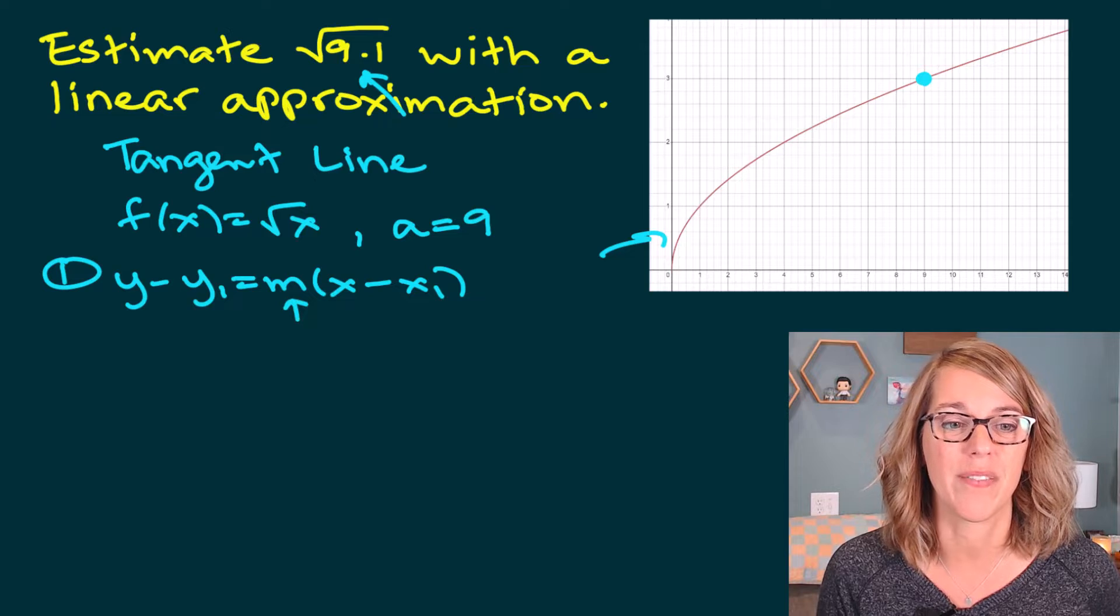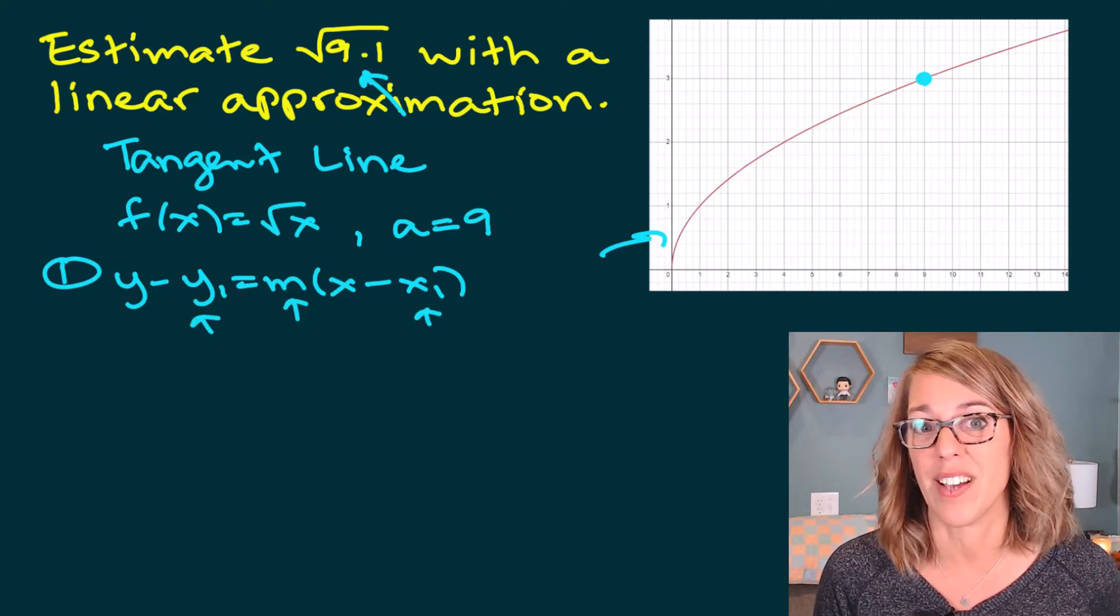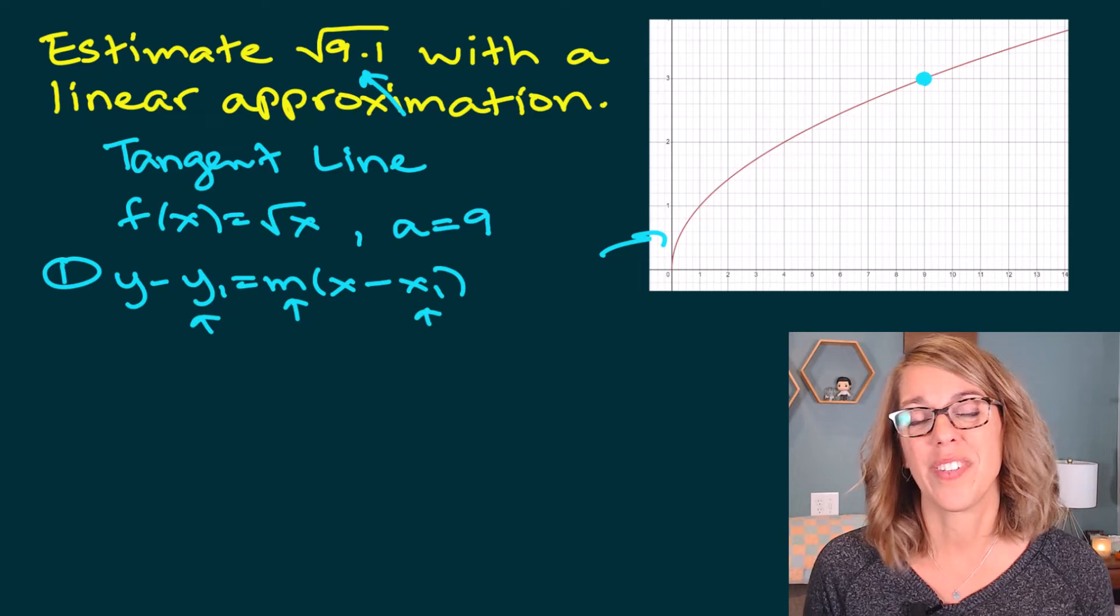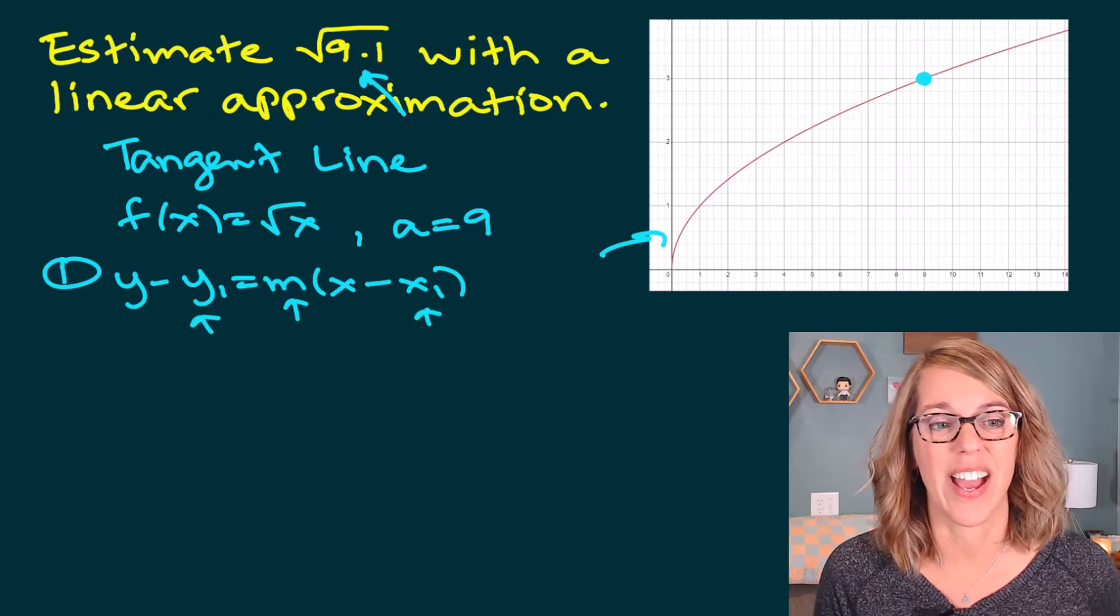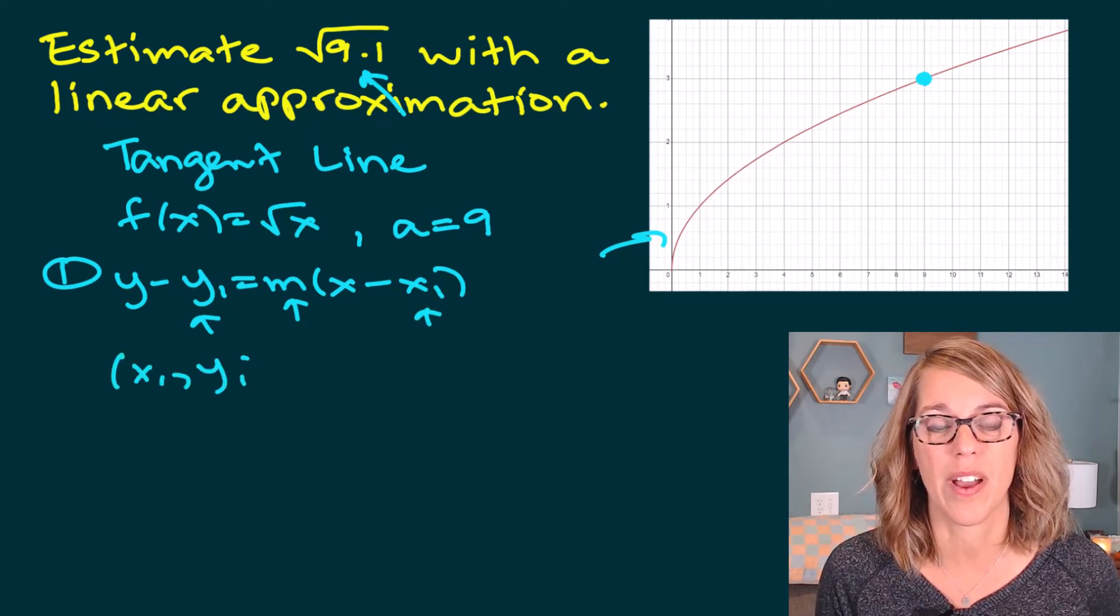m is going to be my derivative. y₁ and x₁ are going to be points on the line. We want this tangent line to be at a equals 9.